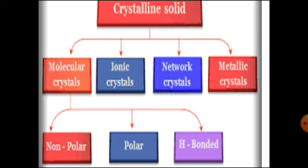Crystalline solids can be classified into four types on the basis of the nature of the bond that binds between the constituent particles. The four types of crystalline solids are molecular crystal, ionic crystal, network crystal, and metallic crystal.